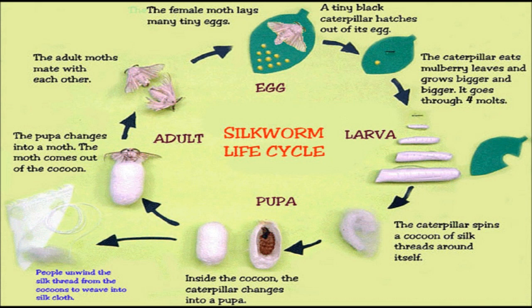Pupa: The caterpillar spins fine silk filaments around it in layers to form a cocoon. The silkworm takes 3 to 7 days to prepare the cocoon. The silk threads are obtained from the cocoon. The color of the cocoon can range from white to golden yellow. Silk moth: The pupa changes into a moth which comes out of the cocoon. The female adult lays eggs and the cycle continues.